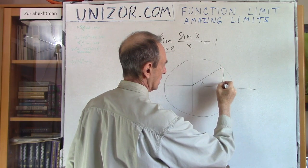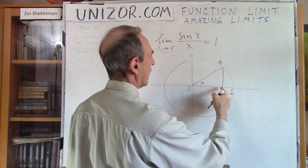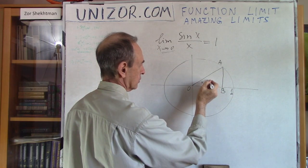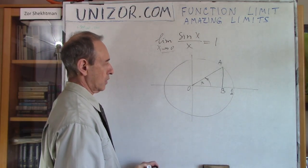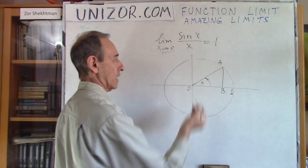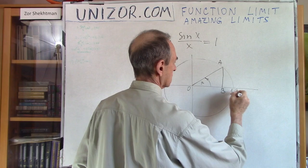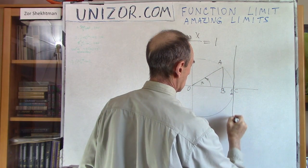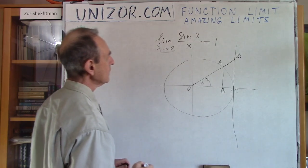So let me start from the definition of sine. As you remember, the trigonometric function sine is defined on a unit circle. The radius is 1, and this is angle x radians. It's defined as the y-coordinate of the point on a unit circle which makes this angle counterclockwise. The length of AB is the value of sine of x, by definition — there's nothing to prove here.